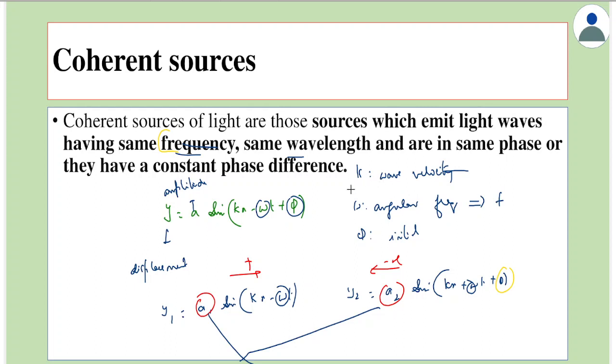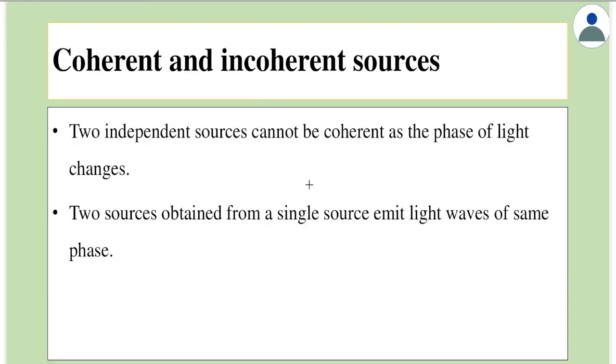These are called as coherent sources. But practically, if you use two different sources, that is if you use two independent sources, then these sources cannot cause interference. That is because if you have two different sources, for example, think of two bulbs.